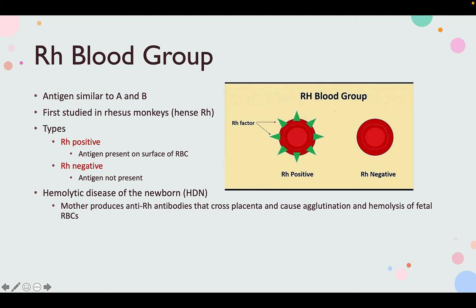The other blood group is RH. It's an antigen similar to A and B — you can see the little spikes on the cell; that's the RH factor, the antigen on the red blood cells. You're either RH positive, meaning you have it, or RH negative, meaning you don't. It was first studied in rhesus monkeys, hence the name RH.